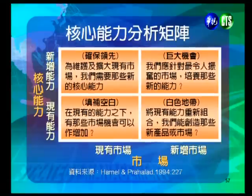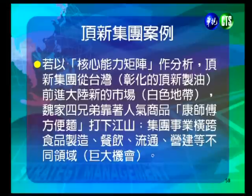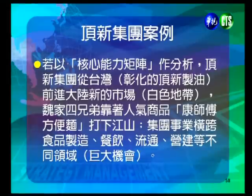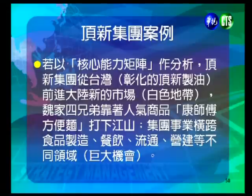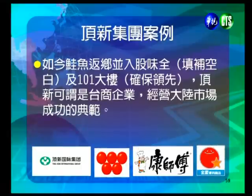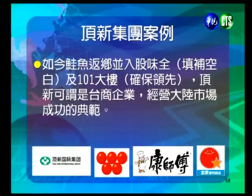以鼎心集團為案例進行核心能力矩陣分析：鼎心集團從台灣彰化的鼎心食品進入大陸新市場，這是白色地帶策略。魏家四兄弟靠著康師傅方便麵打下江山，集團事業橫跨食品製造、餐飲、流通、營建等不同領域，這就像是巨大機會的策略。返鄉並入股衛權是填補空白的策略，入股101大樓則如同確保領先的策略。鼎心集團可說是台商企業中經營大陸市場成功的典範。